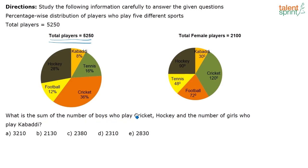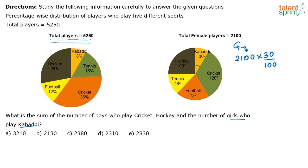What is the sum of the number of boys who play cricket and hockey, and the number of girls who play kabadi? I can very easily find out the girls who play kabadi. You have 2100 girls total. Out of that, 30 degrees represents girls who play kabadi. Whenever you have a pie chart, it's a full circle — the full angle is 360 degrees. So 30 degrees out of 360 degrees means: the number of girls who play kabadi is 2100 into 30 by 360.